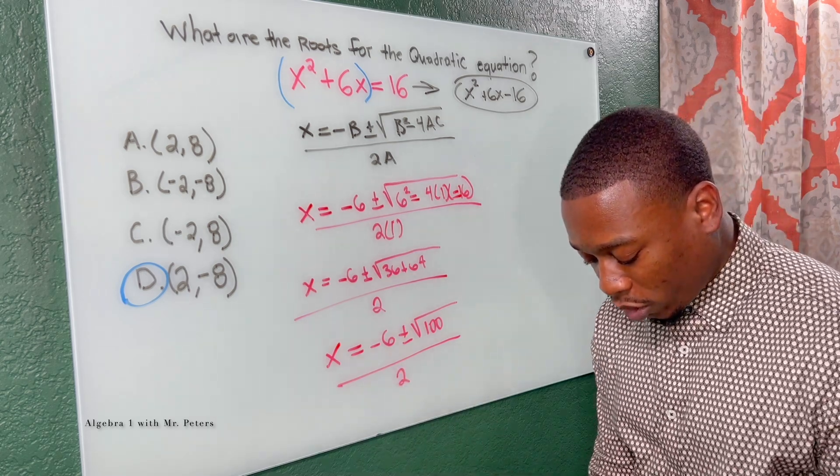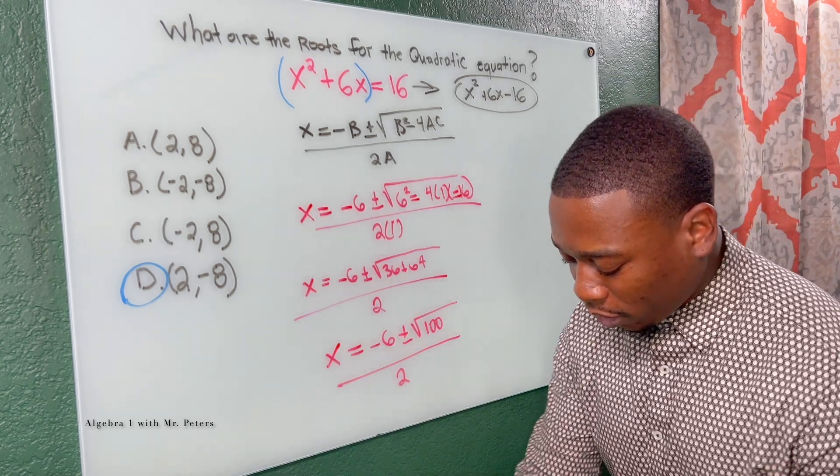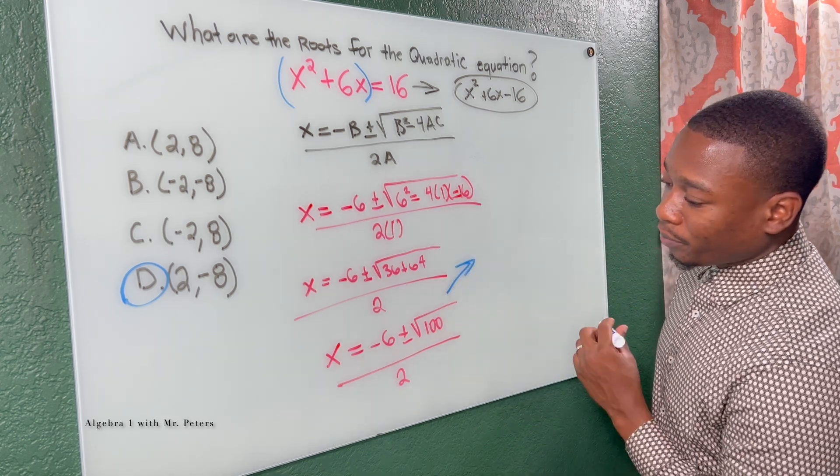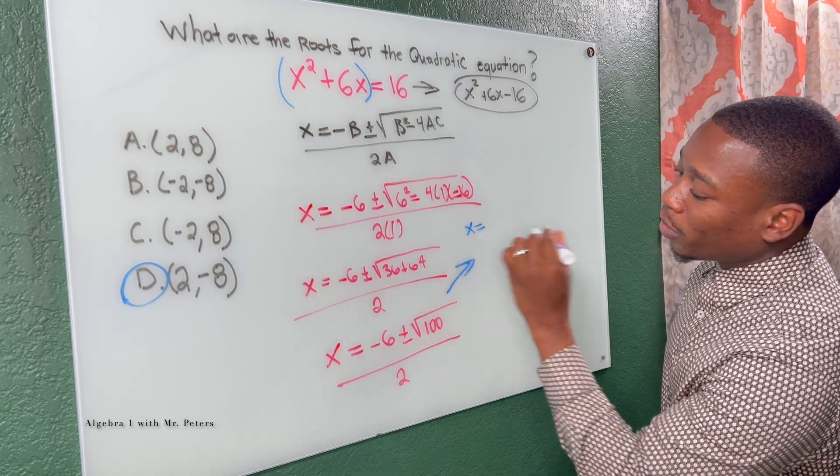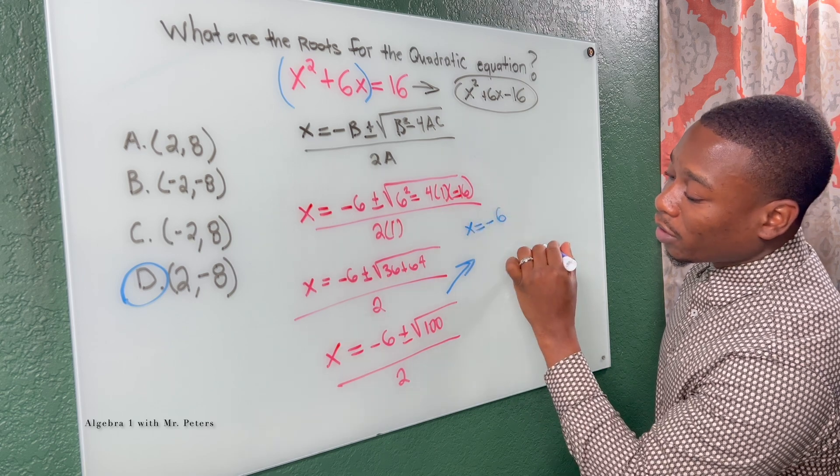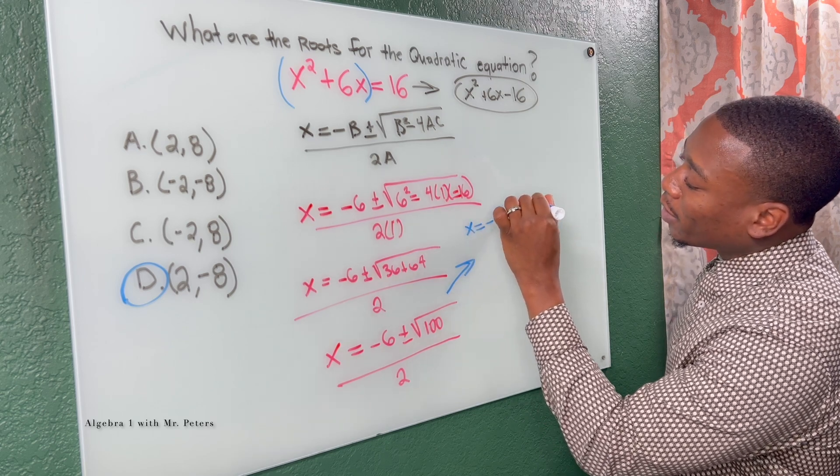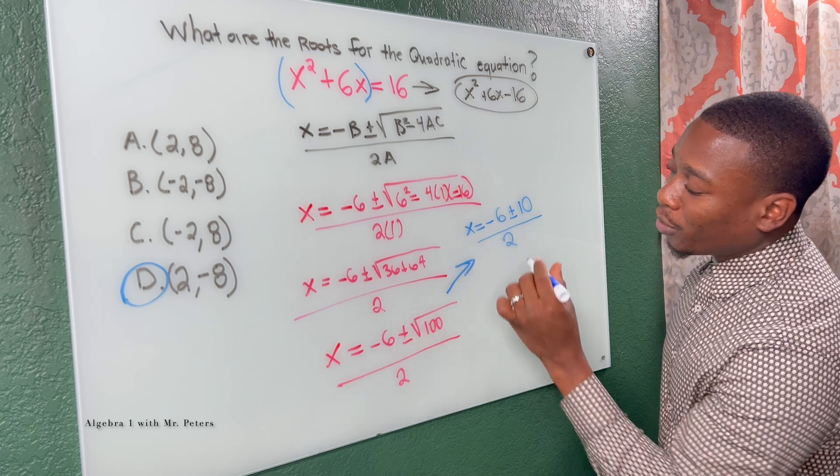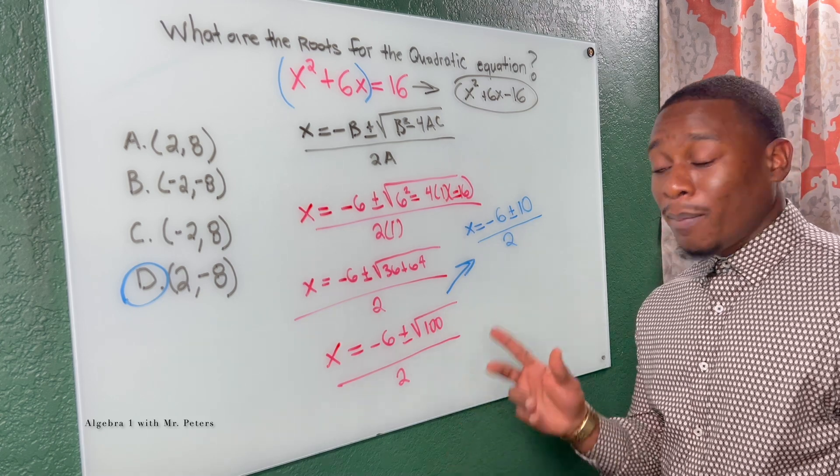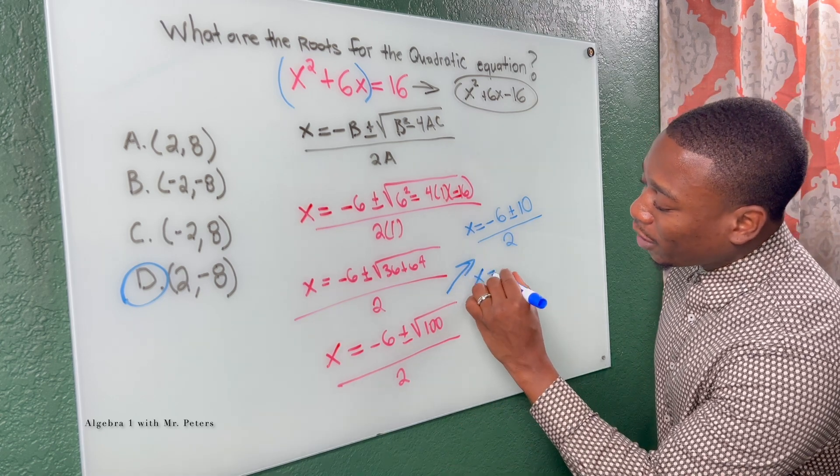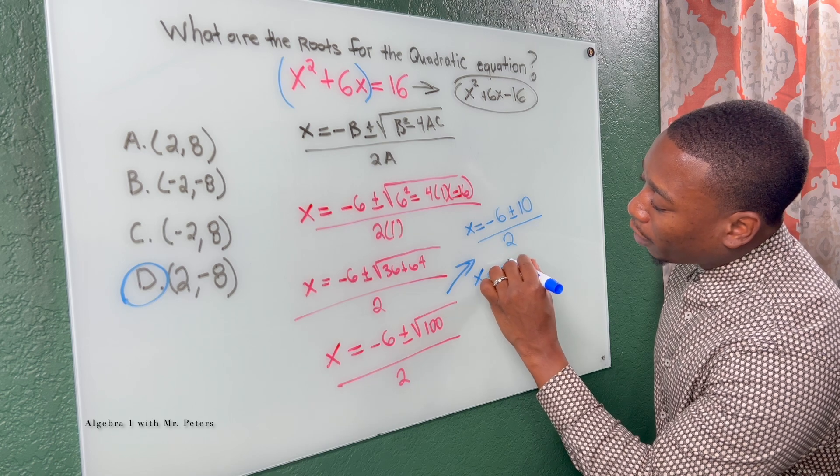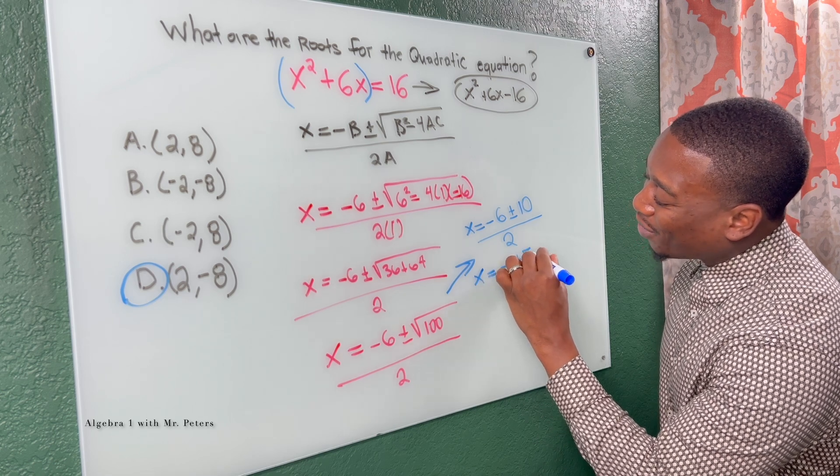Now we're going to switch back to black. No, actually let's switch to blue. Now when we go right here, x is equal to negative six plus or minus 10 over two. Now when we divide by this two, we have x is equal to negative three plus or minus five.